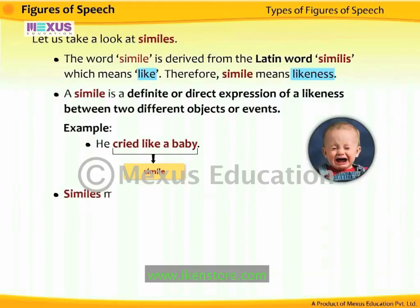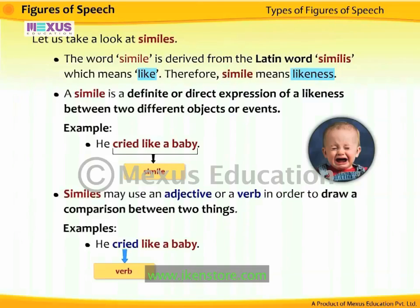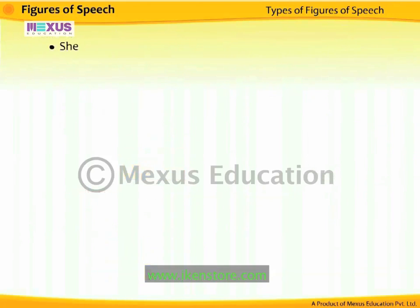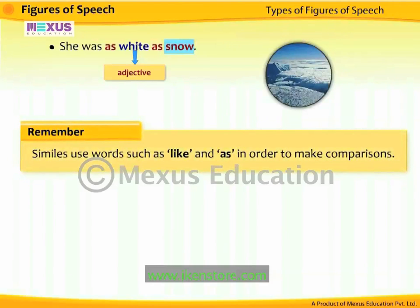Similes may use an adjective or a verb in order to draw a comparison between two things. For example, 'he cried like a baby' — the verb 'cried' is used. 'She was as white as snow' — here the adjective 'white' is used to compare a person's appearance to snow. Remember that similes use words such as 'like' and 'as' in order to make comparisons.